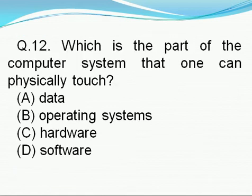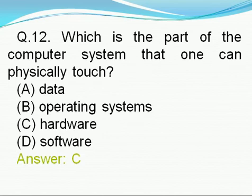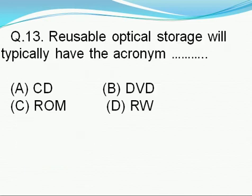Question number 12: Which is the part of the computer system that one can physically touch? Option A: data, option B: operating system, option C: hardware, option D: software. Right answer is C, i.e., hardware. Hardware is the part of the computer system that one can physically touch.